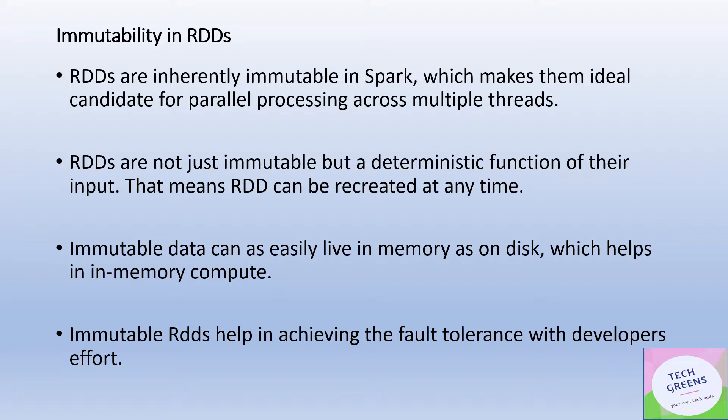RDDs are inherently immutable in Spark across all versions since inception. This makes them an ideal candidate for parallel processing across multiple threads, because we don't have to maintain state or account for what's happening to the underlying resource when multiple threads are accessing it — each thread has its own copy of the RDD.